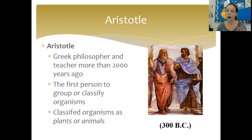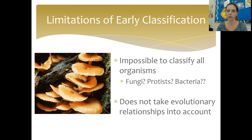The first person who really attempted to classify organisms was a Greek philosopher named Aristotle. He classified organisms into two groups: plants and animals. It started off okay, but as people became more educated, they started to realize that not everything fit into those two categories, and so we needed something a little more complex.